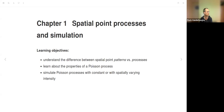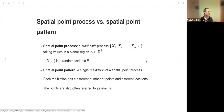Today we are going to discuss chapters 19 and 20 of the book 'Spatial Statistics for Data Science with Applications in R'. Chapter 19 is on spatial point processes and simulation. The learning objectives are to understand the difference between spatial point patterns versus processes, to learn about the properties of a Poisson process, and to simulate Poisson processes with constant or spatially varying intensity.